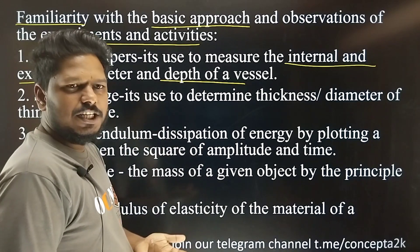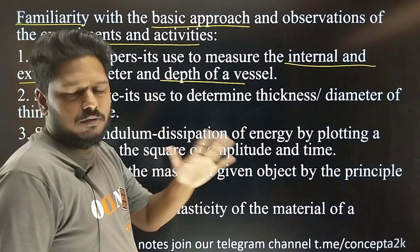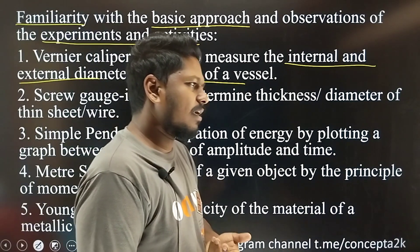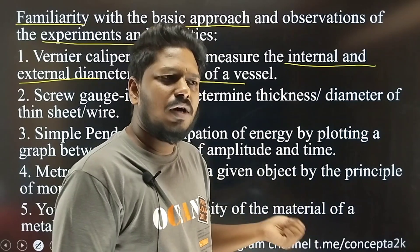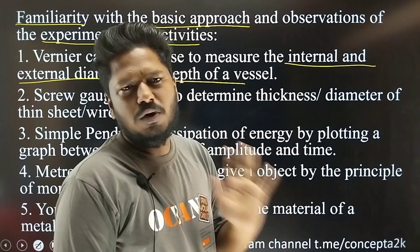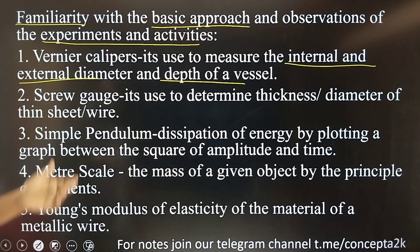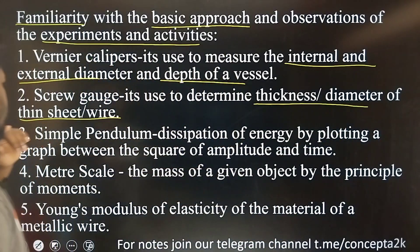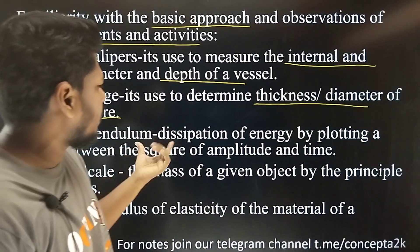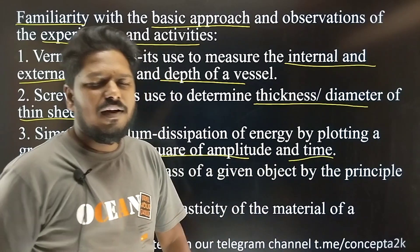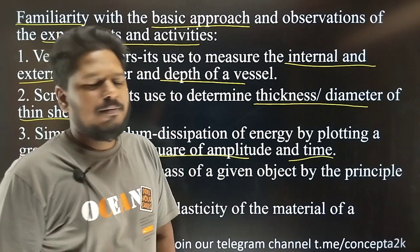Suppose when we teach the theory — if we teach the experiment, we will have 20 minutes extra. Normal video will be 20 minutes. If you have a screw gauge, vernier caliper — this is the same thing but a different section. The screw gauge measures thickness, diameter, thin sheet, wire — it's the same. In a simple pendulum, dissipation of energy by plotting a graph between square of amplitude and time. Time decreases as amplitude decreases — basically, energy loss. Amplitude versus time graph.